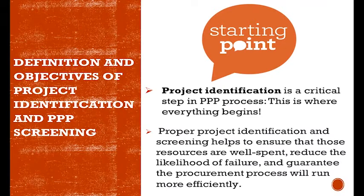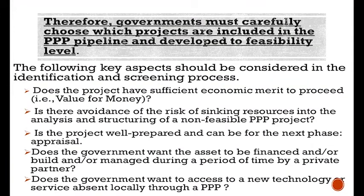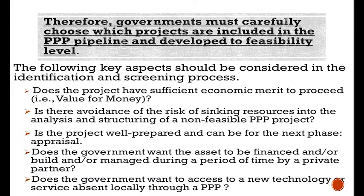Therefore, the government must carefully choose which projects are included in the PPP pipeline and developed to feasibility level. Key aspects considered in the identification and screening process include: does the project have sufficient economic need to proceed? Does it align with set objectives? Is there avoidance of risk? It's not a one-person assessment — it will typically involve three, four, or more different persons in the public sector so that there will be a consensus, with everyone rating the projects that came in.